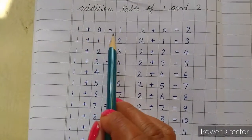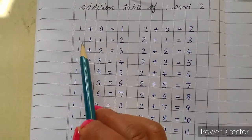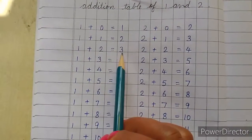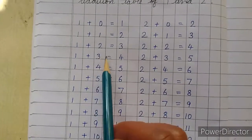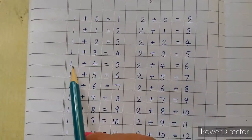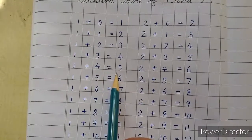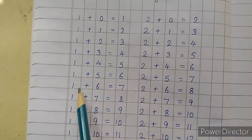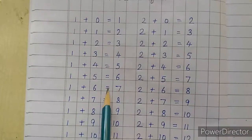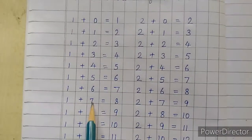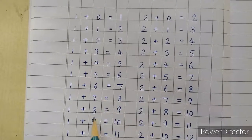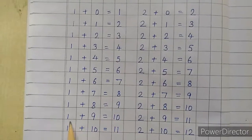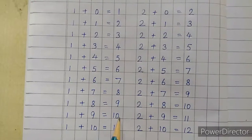1 plus 0 is equal to 1. 1 plus 1 is equal to 2. 1 plus 2 is equal to 3. 1 plus 3 is equal to 4. 1 plus 4 is equal to 5. 1 plus 5 is equal to 6. 1 plus 6 is equal to 7. 1 plus 7 is equal to 8. 1 plus 8 is equal to 9. 1 plus 9 is equal to 10. 1 plus 10 is equal to 11.